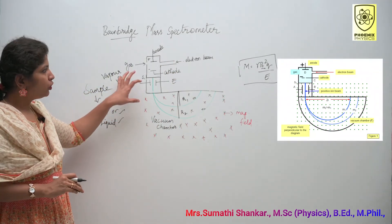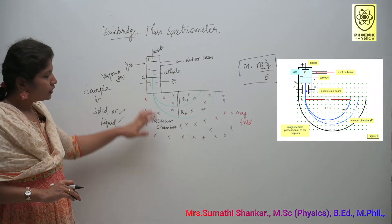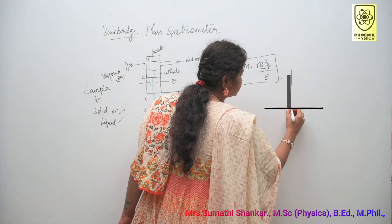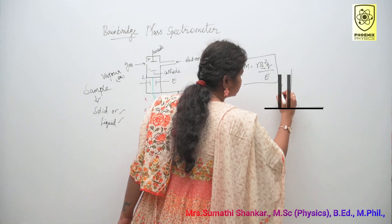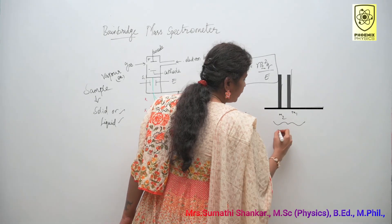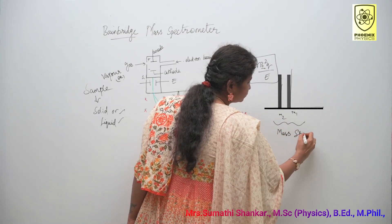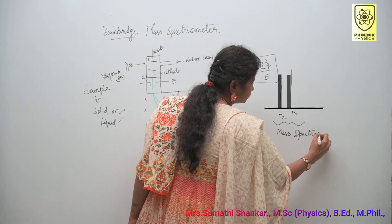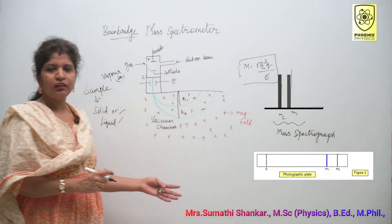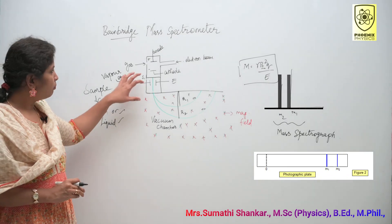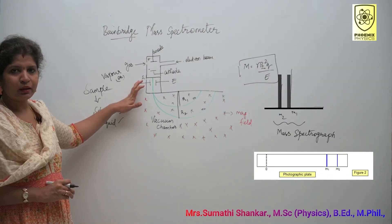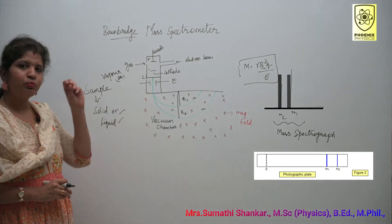The output will look like M1 and M2 — this is called a mass spectrograph. Based on that, we can calculate the mass of the smallest particle. This is one of the examples to measure smaller masses.